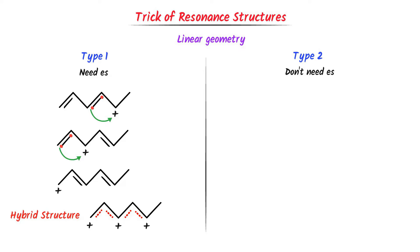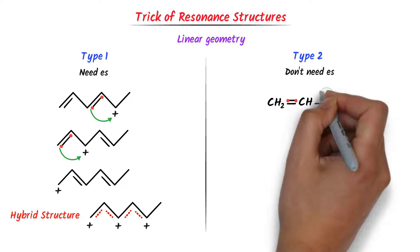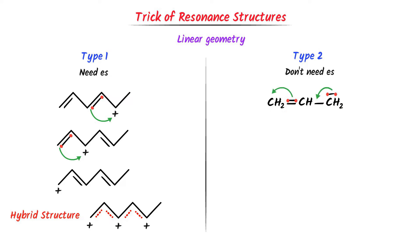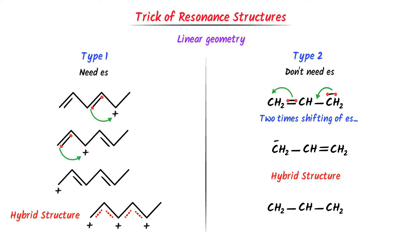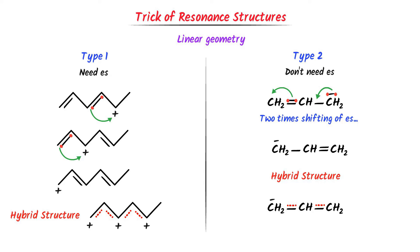Now let me teach you the second type — do not need electrons. For example, consider this molecule. There are pi electrons present. This negative sign means this carbon already has an extra electron, so it doesn't need any more. So this electron will shift here, and this pi electron will shift here. Remember that in type 2 questions, we usually draw a double arrow or two-step shifting of electrons. This carbon lost its extra electron and a double bond is formed. The extra pi electron is shifted, so negative charge appears on the other carbon. For the hybrid structure, I write CH2 single bond CH2 single bond CH2. The double bond is present here and here, and the negative charge is present on either of these carbons. This molecule has two resonance structures.